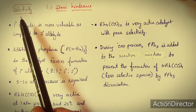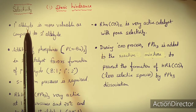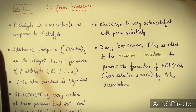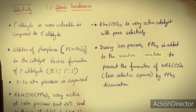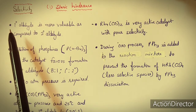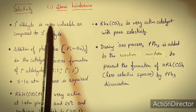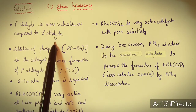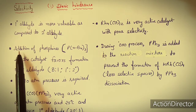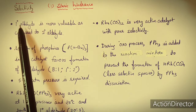Now we will discuss the selectivity of hydroformylation. Primary (linear) aldehyde is more valuable than secondary (branched) aldehyde. The selectivity depends upon the steric hindrance in the catalyst. Several factors clarify how the hydroformylation catalyst selects for the desired product.